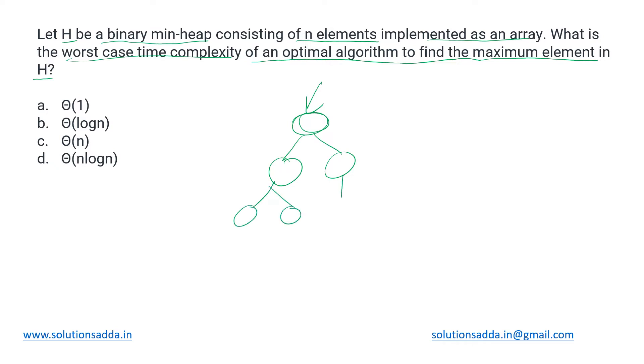And in that heap we need to determine the maximum element. So we know that what is the property of min-heap: that the parent will be lesser than both its left child as well as the right child. If this is two, then its children can be four and three, something like that.